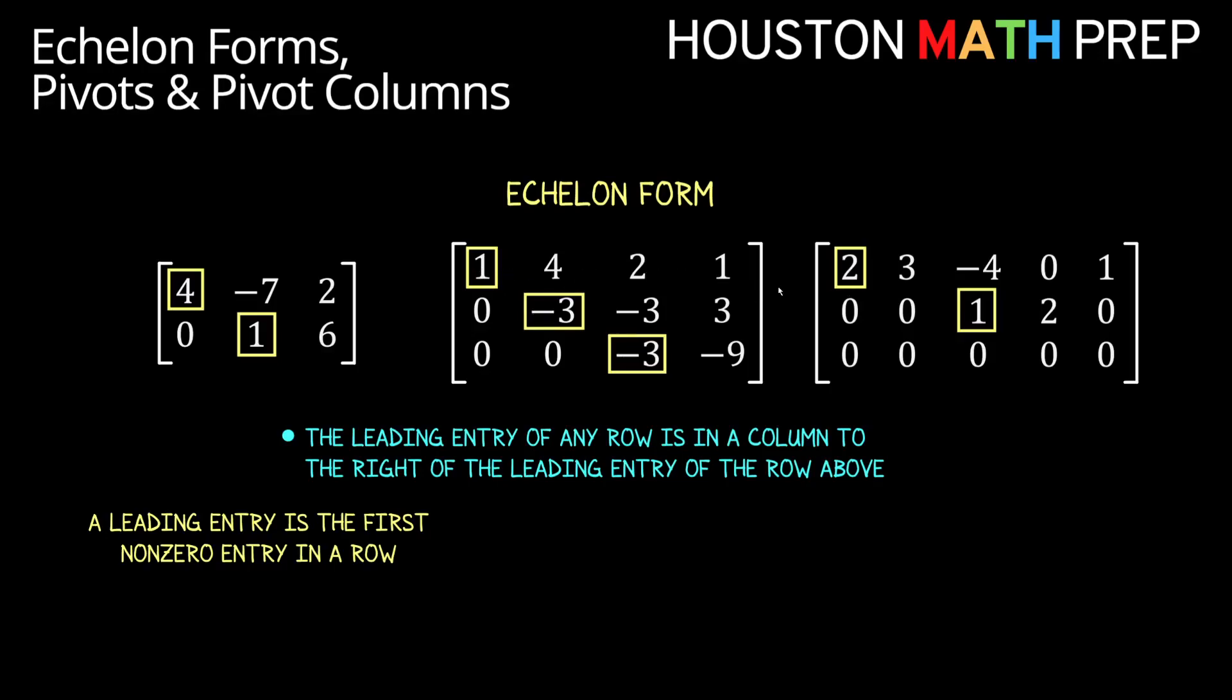Looking at this last matrix here, you'll notice that it's certainly possible we don't have a leading entry in each column. You can see that this leading entry of one is definitely located to the right of leading entry two above, but it doesn't have to be immediately to the right of it, just to the right somewhere. Keep in mind that it's also possible for a row not to have a leading entry. If we look at the last row of this matrix on the right, it contains all zeros. And remember that leading entries need to be non-zero, so there's no leading entry in this row here.